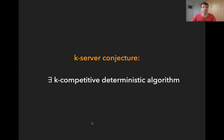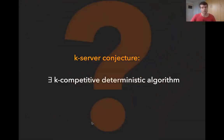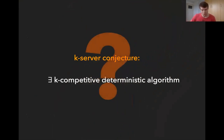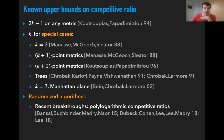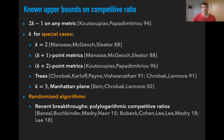The k-server conjecture, which was also formulated back then, states that there exists a deterministic algorithm for which this lower bound is tight. So the k-server conjecture is that there exists a k-competitive deterministic algorithm for this problem. This problem is still open today, and we will not solve it today. But what we do is we make some progress towards it.